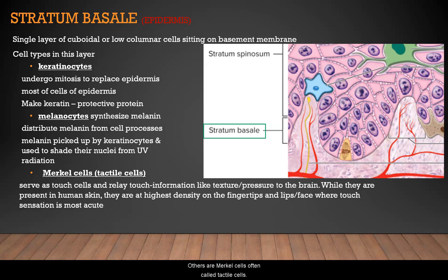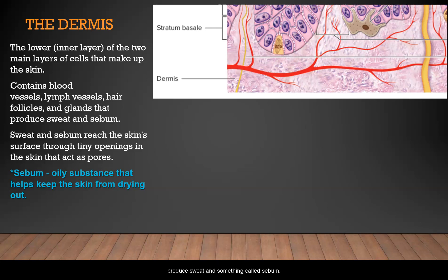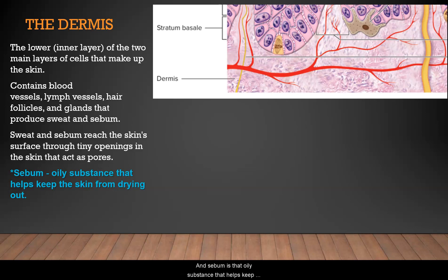Merkel cells, often called tactile cells, serve as touch cells that relay information about texture and pressure to the brain. While present throughout skin, they are at their highest density on the fingertips, lips, and face, where touch sensation is most acute. The dermis contains blood vessels, lymph vessels, hair follicles, and glands that produce sweat and sebum. Sweat and sebum reach the skin's surface through pores, and sebum is the oily substance that helps keep your skin from becoming dry and cracked.